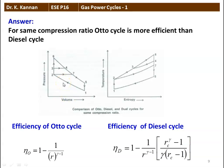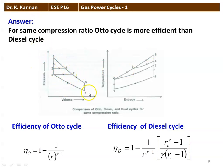Another way of seeing this is through the PV diagram. The Otto cycle is represented by 1, 2, 6, 5, 1 (constant volume heat addition), while the diesel cycle is 1, 2, 7, 5, 1 (constant pressure heat addition). The work done in the case of the Otto cycle is more than the diesel cycle, so the efficiency is higher for the Otto cycle for the same compression ratio compared with the diesel cycle.